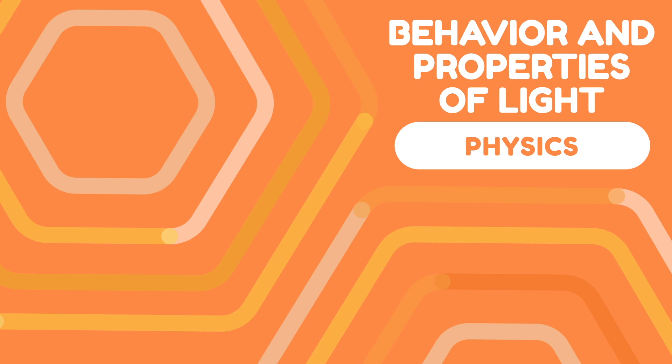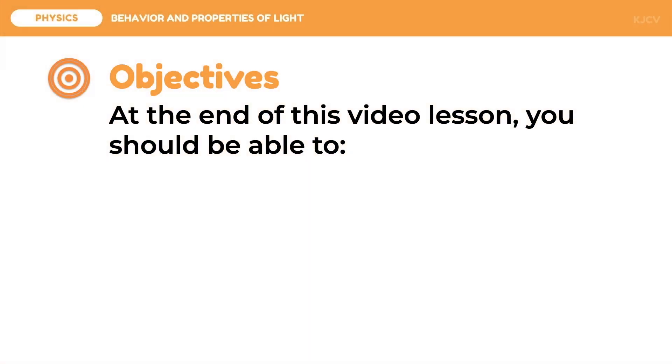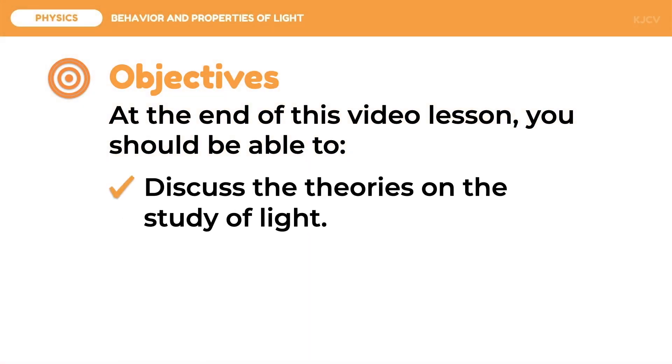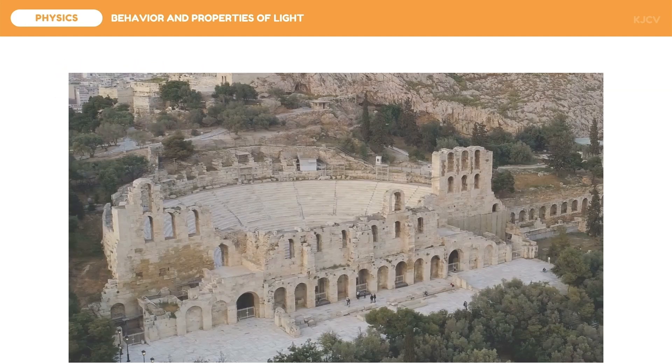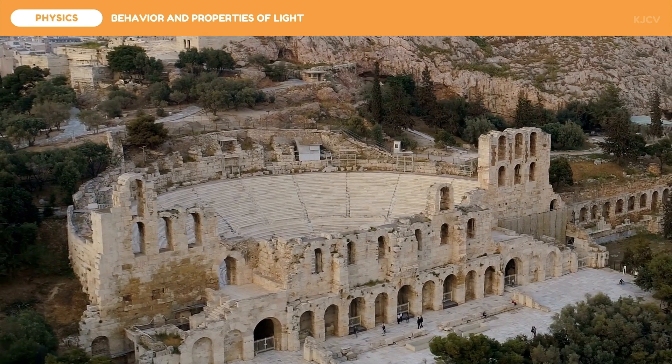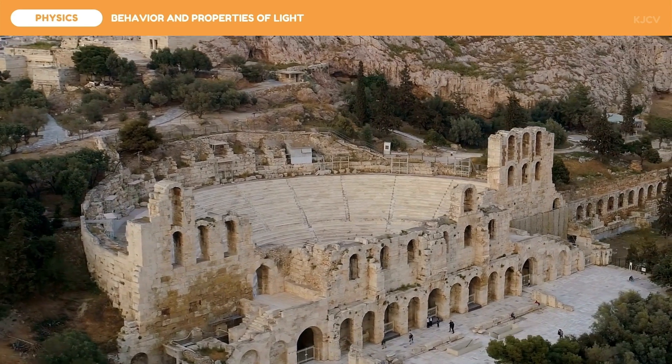In this lesson we are going to discuss the behavior and properties of light. At the end of this video lesson you should be able to discuss the theories on the study of light and explain the different properties of light. Light is a complex topic to be discussed.